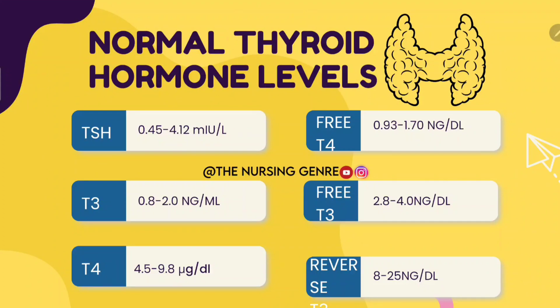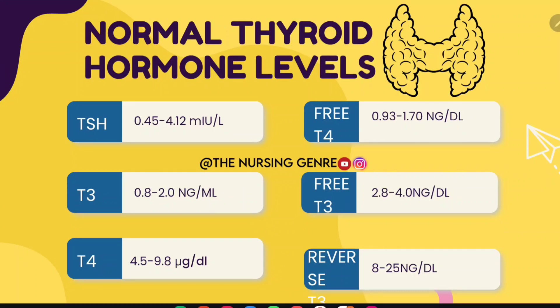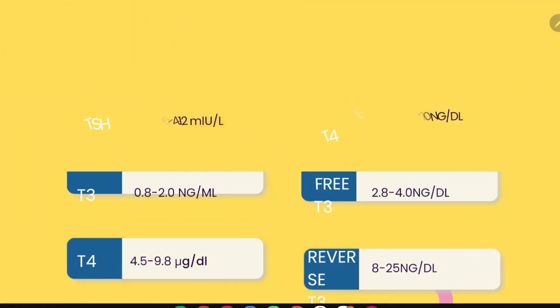Normal values: TSH (thyroid stimulating hormone) is 0.45 to 4.12 milli-international units per liter. T3 is 0.93 to 1.70 nanogram per liter, or 0.8 to 2.0 nanogram per mL. T4 is 4.5 to 9.8 micrograms per dL. Free T3 is 2.8 to 4.0 nanogram per dL, and total T3 is 8.8 to 25 nanogram per dL.